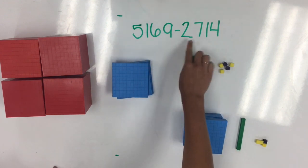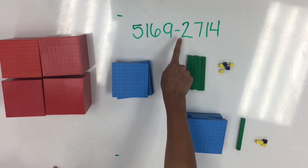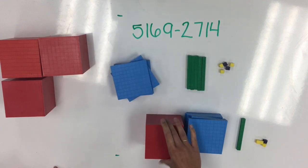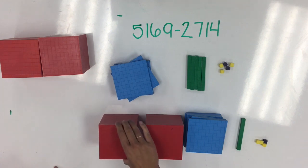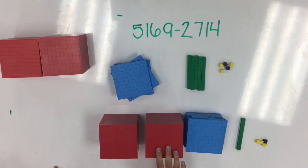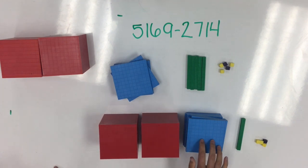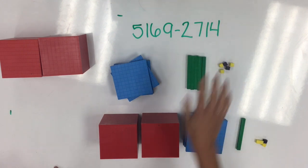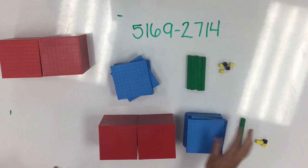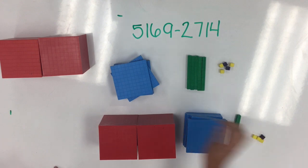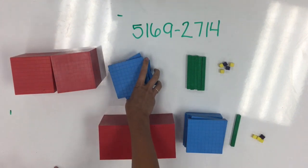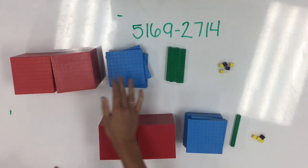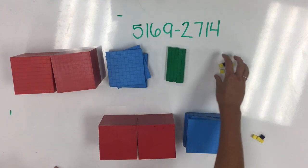Finally, we move to the thousands place, where I need to take away 2 groups of 1,000. Remember, I can check my work to make sure I've taken away the correct amount by checking here: 2,714, 2,714. Which leaves me with 2,455.